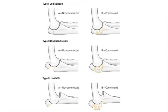Plate fixation should be considered for fracture comminution, as seen in Mayo 2b injuries; humero-ulnar instability, as seen in Mayo 3a and 3b injuries; and distal fracture extension beyond the level of the coronoid.